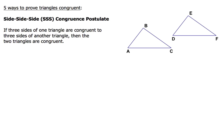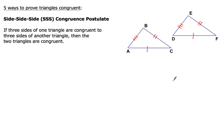Go ahead and hit pause, copy all that down, and then we'll add a couple of markings to our diagram to illustrate this postulate. When you take a look at a picture of two triangles, you're going to have one side of one triangle congruent to another side of another triangle, and they'll usually be notated with a hash mark. We've got a second side congruent and a third side congruent, so you'll see three different markings on each one of the triangles.